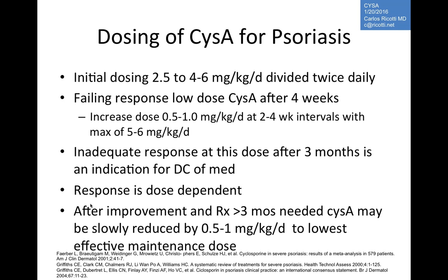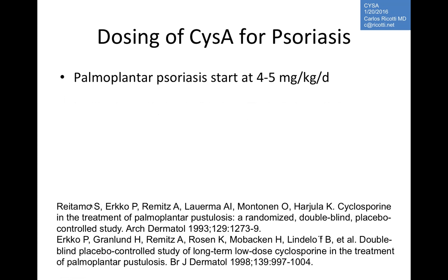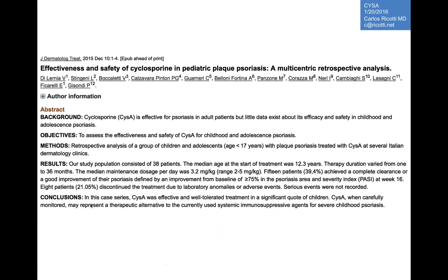After improvement, you can taper to a lower effective maintenance dose. Even though we advise against treating for more than one to two years, some patients remain on cyclosporine for years. The primary reason to limit duration is chronic nephrotoxicity. We try to keep them on it for short periods at lower dosages. Palmoplantar psoriasis tends to require higher starting dosages due to its recalcitrant nature.